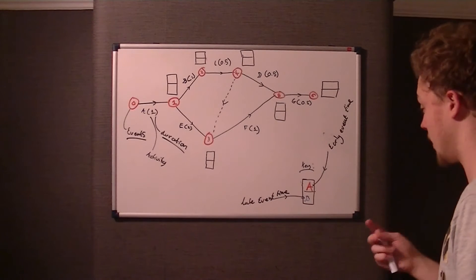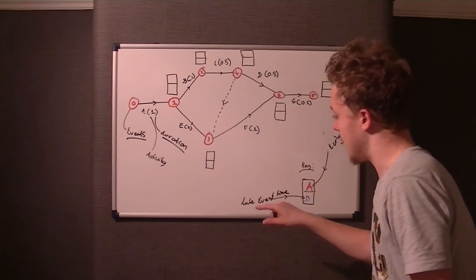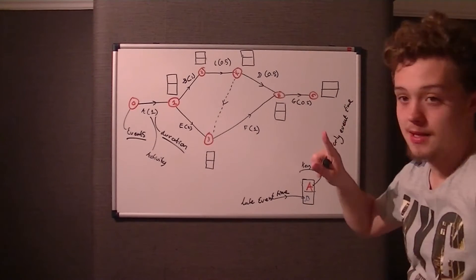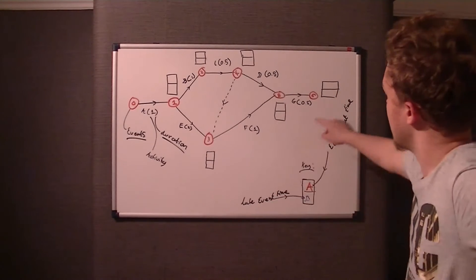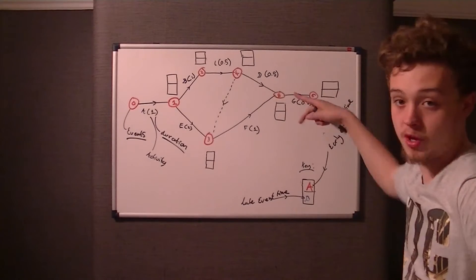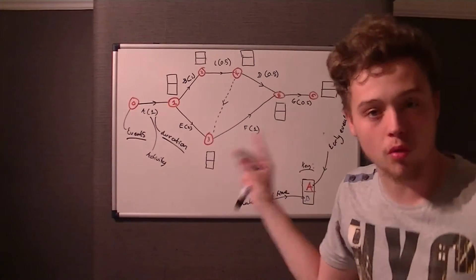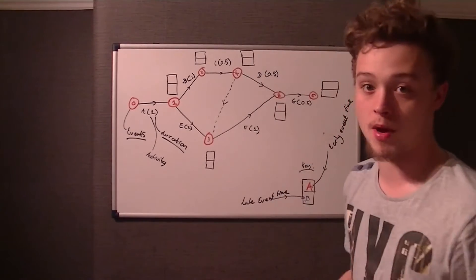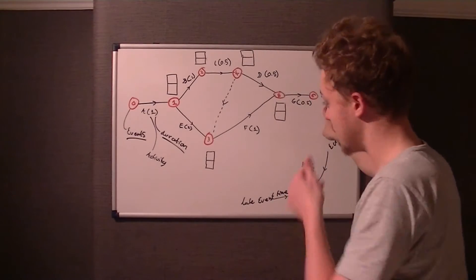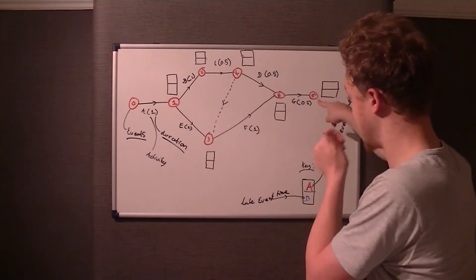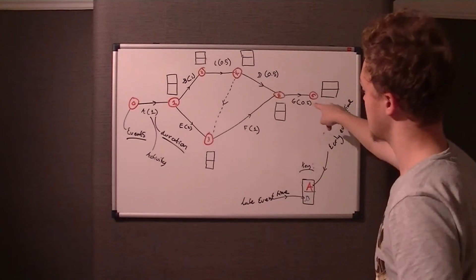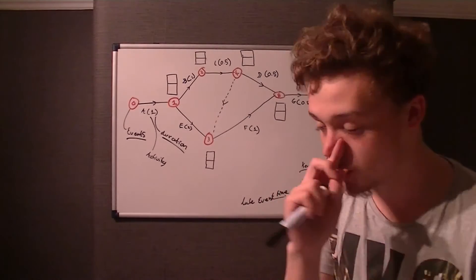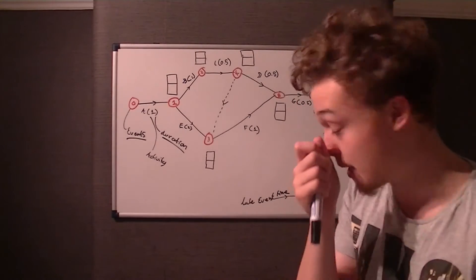What you might be asked to do — and what this question asks — is work out the earliest event time. The key thing to notice is that the last event — event six in this case — the Early Event Time and Late Event Time will be exactly the same number.